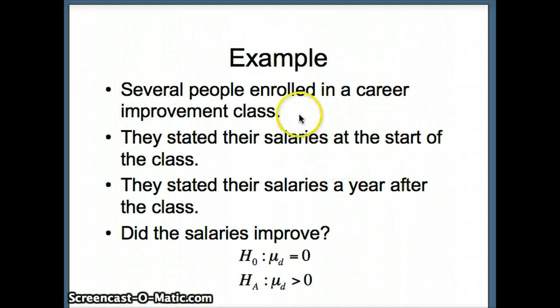Okay, one more quick example. We have several people enrolled in a career improvement class. They stated their salaries at the start of the class, and they stated their salaries a year after the class. And the question is, did the salaries improve? So again, a person with a high salary at the beginning will likely have a high salary at the end, so we're dealing with dependent samples. H-naught mu sub d equals 0 versus H-a mu sub d is greater than 0.